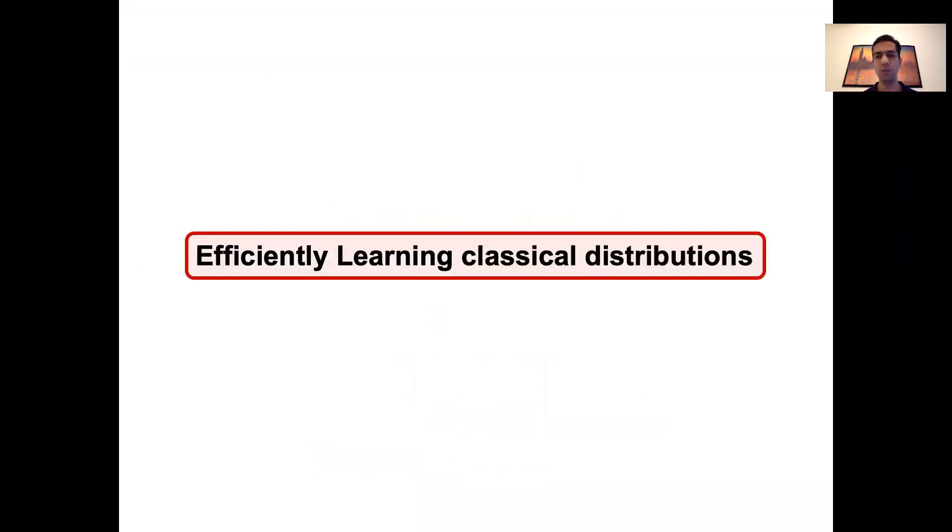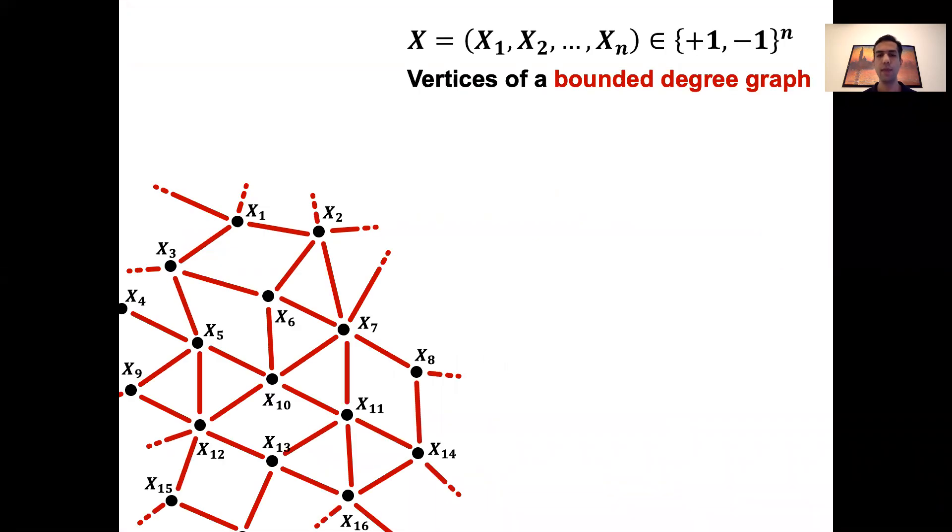Before telling you about learning quantum systems, let me begin with reviewing some of the things we know about learning their classical counterparts. Suppose we have n binary random variables arranged on the vertices of a bounded degree graph. Also suppose there is a family of probability distributions over these random variables parameterized by some set of coefficients that we collectively denote by A. Then a common setup in learning theory and statistics is to use IID samples from the distribution P_A to learn the parameter A that fully specifies this probability distribution.